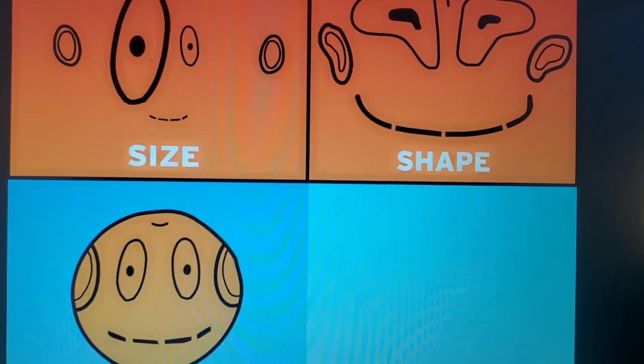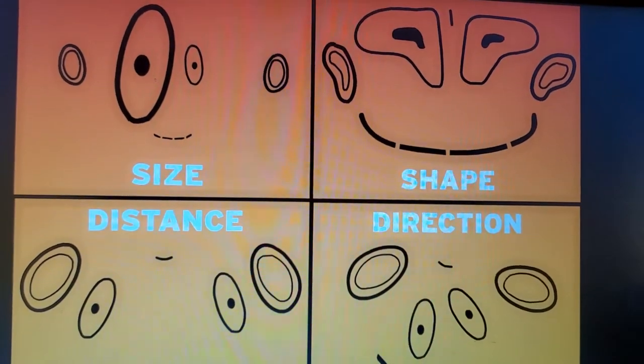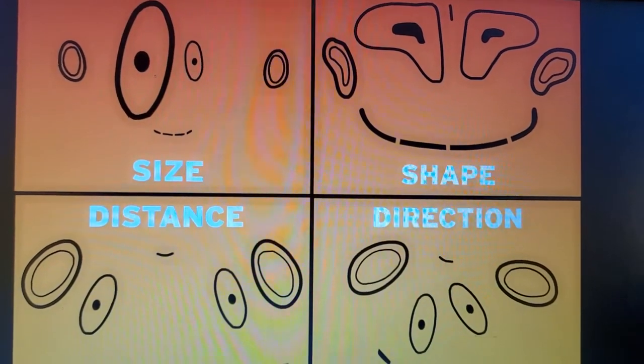Features might be the wrong size, or shapes might get distorted, or the distance or direction between things is off. The same thing happens when you transform a 3D globe into a 2D map.